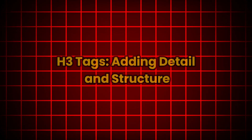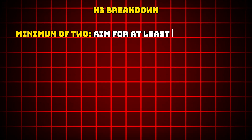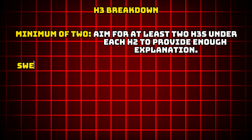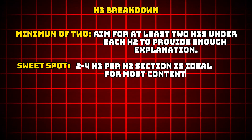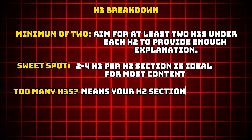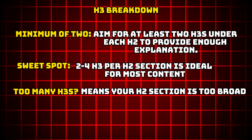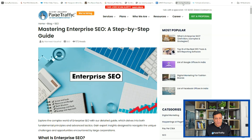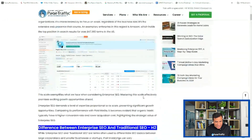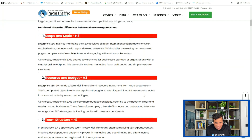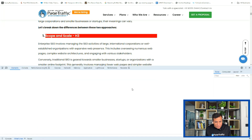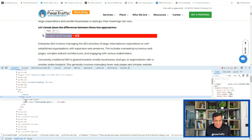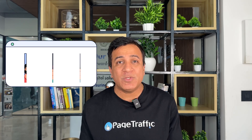H3 tags — adding details and structure. Think of H3 tags as a way to further break down sections created by your H2 tags. Minimum of two: aim for at least two H3s under each H2 to provide enough explanation. Sweet spot: two to four H3s per H2 section is ideal for most content. Too many H3s? It might mean your H2 section is too broad and could be split into multiple H2 sections. SEO tip: include relevant questions people are actually searching for in your H3 tags — great for long-form content. Here's the H3 structure on the Page Traffic blog — see how under each H2 there are multiple H3s. I'll use inspect element to confirm their HTML tags. These H3s make the content even easier to scan and digest. A well-structured website with H1, H2 and H3 tags working together is a win for both users and search engines.